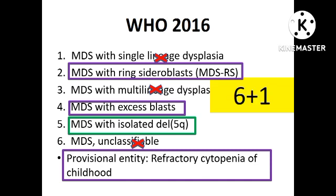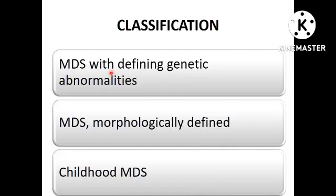There were 6 plus 1 categories — 6 entities with a provisional category — in the WHO 2016 classification. But now the classification is simplified. You have adult MDS and childhood MDS categories. Under adult MDS, you have MDS with defining genetic abnormalities and MDS morphologically defined — these are the 2 broad headings under adult MDS.